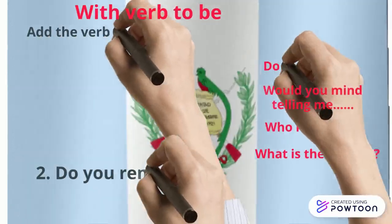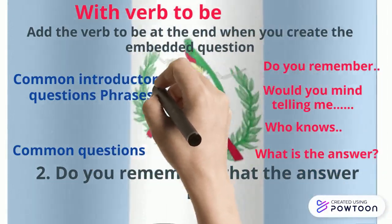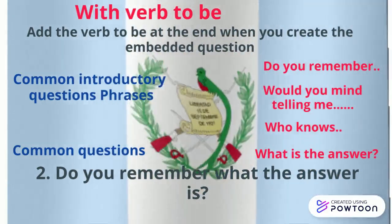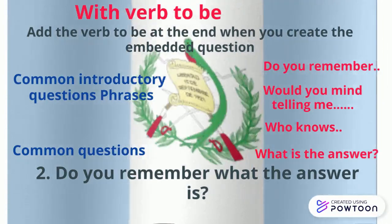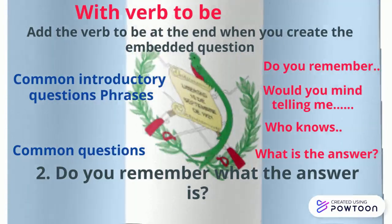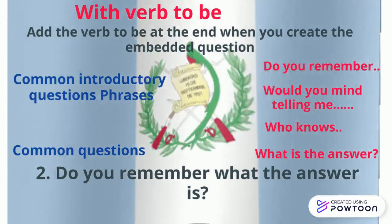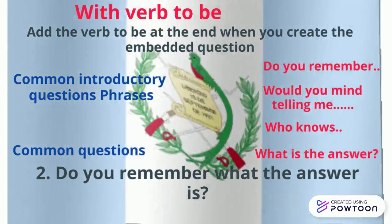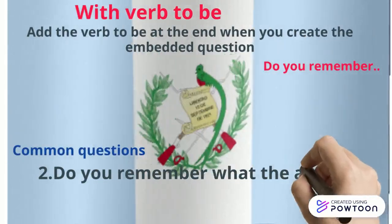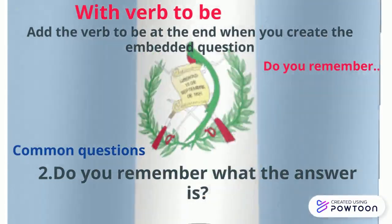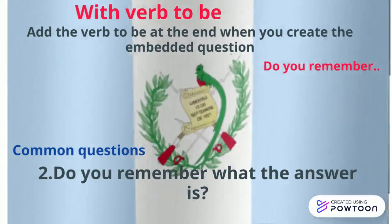For embedded questions with the verb 'to be,' we move the verb to be to the end of the question when creating an embedded question. For example, using 'do you remember' as the introductory phrase and 'what is the answer' as the question, we say: 'do you remember what the answer is?' — the verb 'to be' is moved to the end.